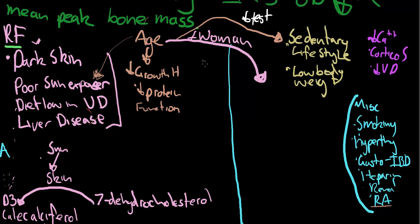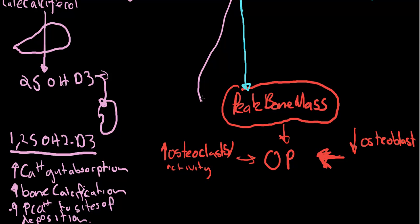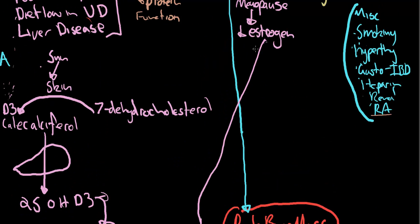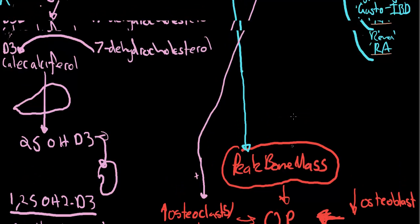Which is why we're now going to talk about what happens when age and womanhood interact. Being older and being a woman brings with it menopause. You have your decrease in estrogen. Estrogen normally promotes osteoclast apoptosis. So by removing estrogen or having less estrogen, you're going to have more osteoclasts.